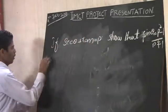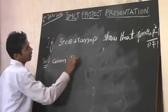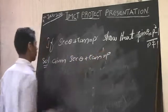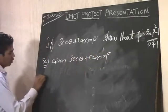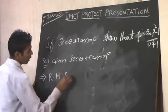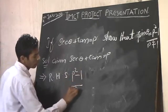Given is sec theta plus tan theta equals P. The next step is write RHS. RHS means right hand side. Right hand side is P squared minus 1 divided by P squared plus 1.